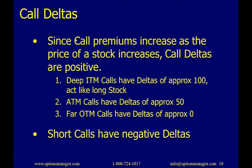Call deltas are generally positive because premiums increase as the price of stock increases. A deep in-the-money call will have a delta of approximately 100 and will act like long stock. At-the-money calls have deltas of approximately 50 — the more time remaining, the higher that delta might be, perhaps 57 or 58 with three months to go. Far out-of-the-money calls have deltas of approximately zero. Long calls have positive deltas; short calls have negative deltas.